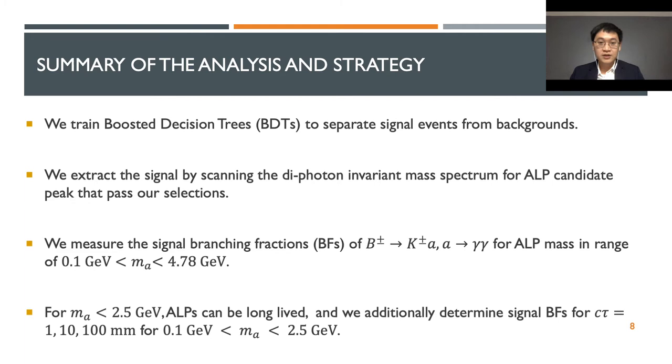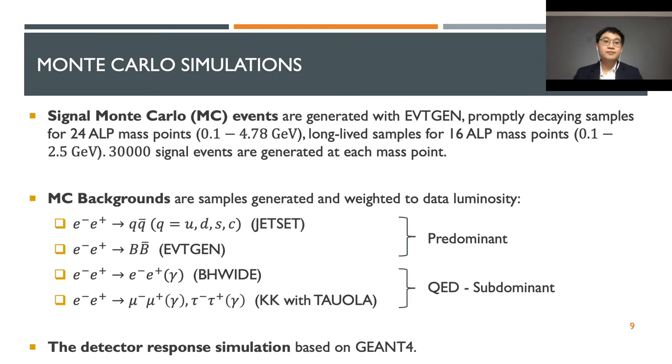However, for light axion, they can be long-lived. Thus, for the mass range below 2.5 GeV, we also determine signal branching fraction for 3 different lifetimes of 1, 10, and 100 mm. Note that for axion mass greater than 2.5 GeV, because the lifetime is inversely proportional to the mass cubed, the lifetime is suppressed, and we do not look for long-lived axion beyond this limit.